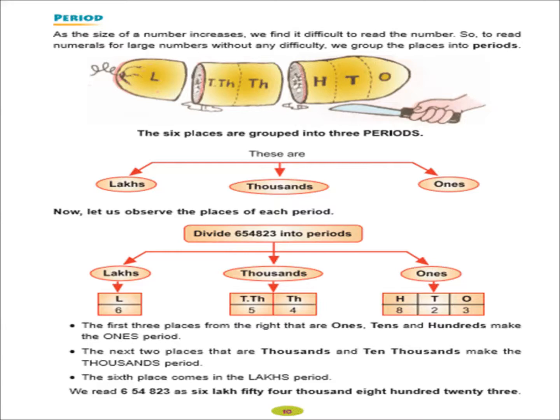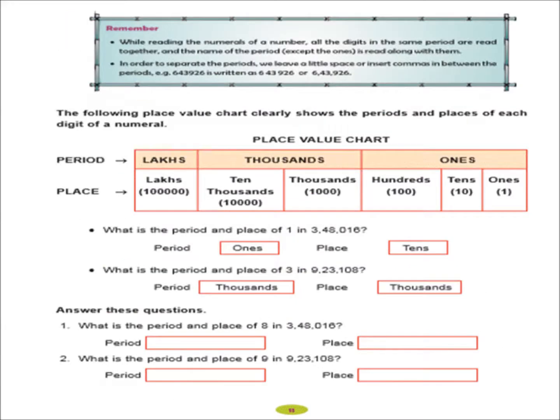The first 3 places from the right are 1s, 10s and 100s. That means it makes the 1s period. The next 2 places are at 1000s and 10,000, make the 1000s periods. The 6th place comes in the lakhs period. So, we read 6,54,823. Next, you have to remember 2 things. It means you have to keep 2 things in your mind. First, while reading the numerals of a number, all the digits in the same period are read together and the name of a period is read along with them. And second thing, in order to separate the periods, we leave a little space or insert comma in between the periods.